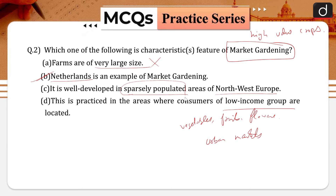The Netherlands specializes in growing flowers and horticulture crops, especially tulips, which are flown to all major cities of Europe. Therefore, option B becomes correct.